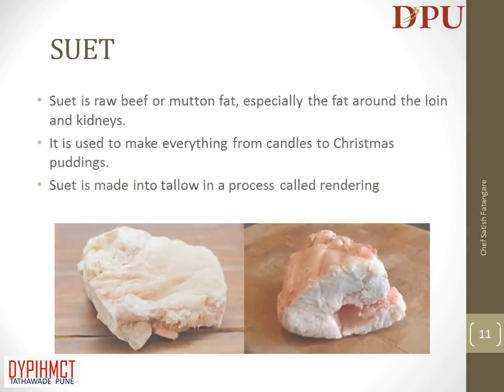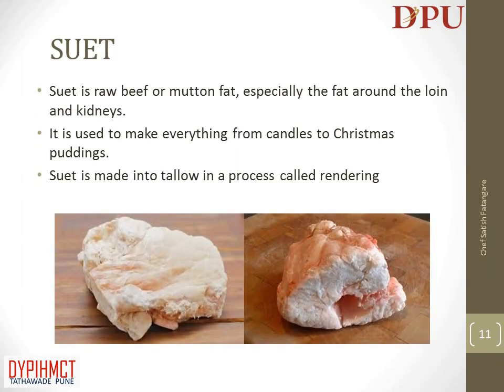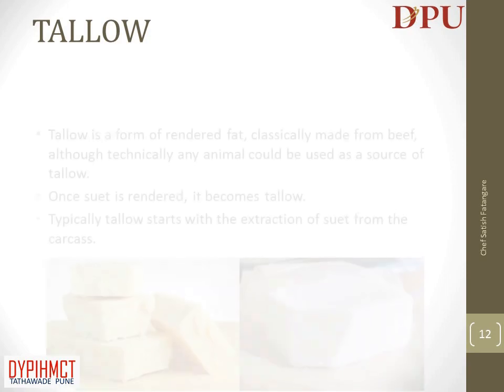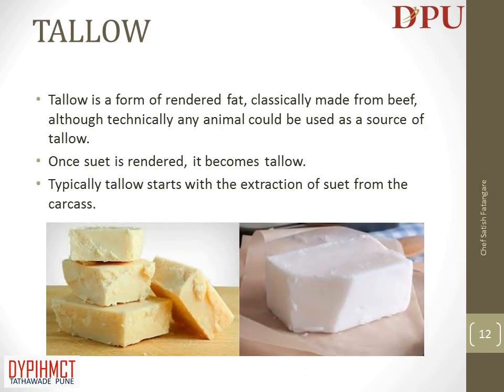In this slide we will discuss about suet. Suet is raw beef or mutton fat, especially the fat around the loin and kidneys. It is used to make everything from candles to Christmas puddings. Suet is made into tallow in a process called rendering. Tallow is a form of rendered fat, classically made from beef, though technically any animal can be used. Once suet is rendered, it becomes tallow. Typically, tallow production starts with the extraction of suet from the carcass.